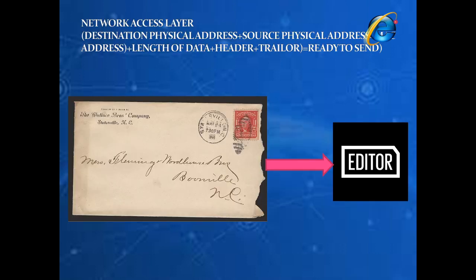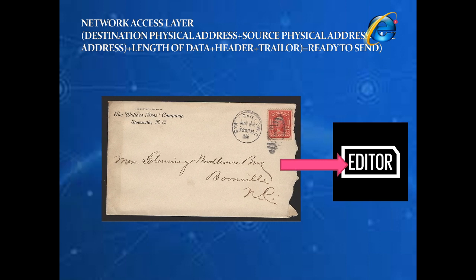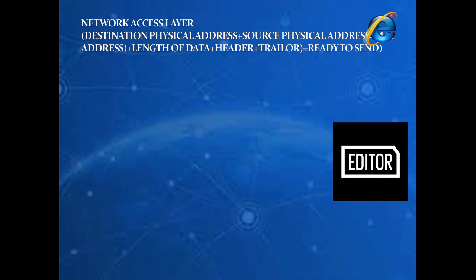At the Network Access Layer, the data reaches the editor — the destination. Here we have the destination physical address, the source physical address, the length of the data, a header, and a trailer so that it can be verified whether all packets have arrived. This was all about TCP and IP protocol. I hope you have understood the concept of TCP/IP — the different functions of TCP and IP. If you have any doubts, you can ask me. Thank you for watching.